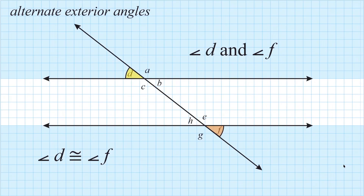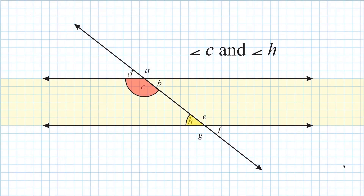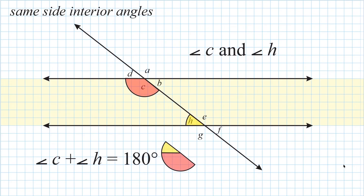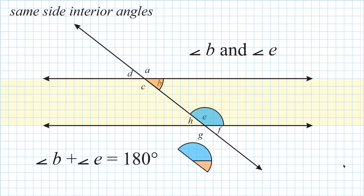Now let's take a look at interior angles. Angles C and H are both on the same side of our transversal and on the interior of our parallel lines, so they are same side interior angles. Any set of same side interior angles with parallel lines has an angle sum of 180 degrees. Another set of same side interior angles is angles B and E — also on the same side of the transversal, on the interior, and also summing to 180 degrees.